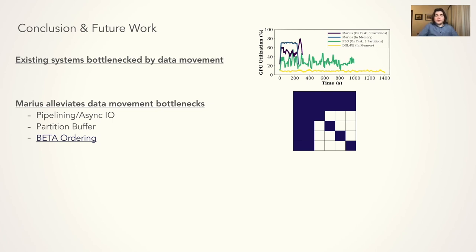In conclusion, what we have shown is that existing systems for the training of graph embeddings are bottlenecked by data movement. MARIUS alleviates these data movement bottlenecks through pipelining and asynchronous I/O, full memory stack utilization through the partition buffer, and then I/O minimization with the novel BETA ordering.